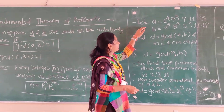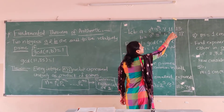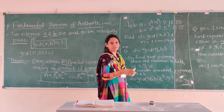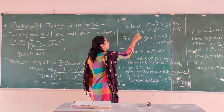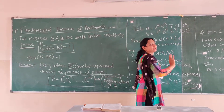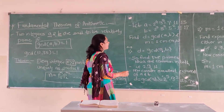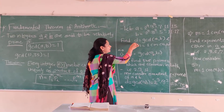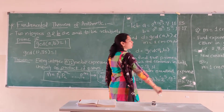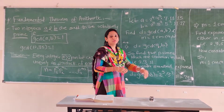Here is the example. We are having integer a = 2^4 · 3^3 · 7^1 · 11^1 · 13^1, and b = 2^3 · 3^2 · 5^2 · 11^1 · 17^1. The query is to find GCD of a and b, and also LCM of a and b. We will do this using the product of primes approach.